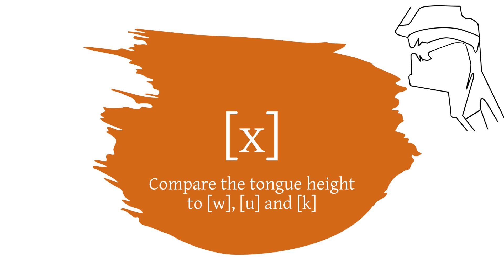compare velar approximants such as wa and their corresponding full vowels, such as u, as well as plosives such as ka, that are also pronounced at the velum.